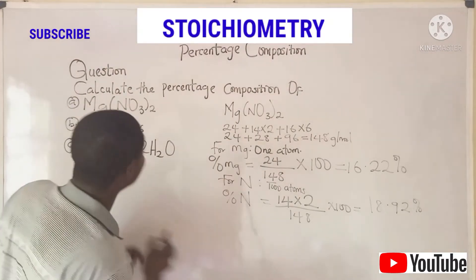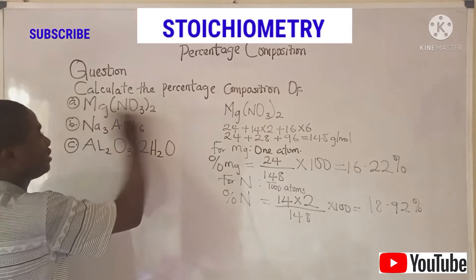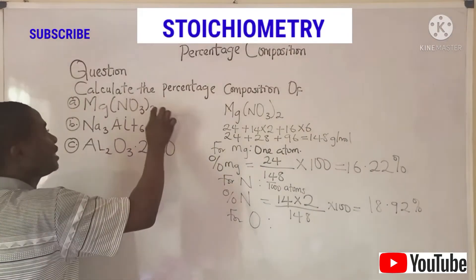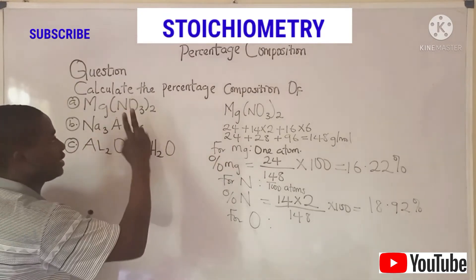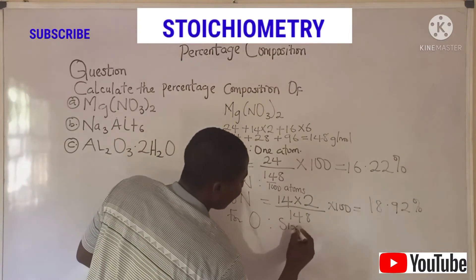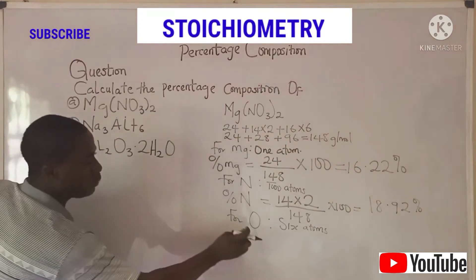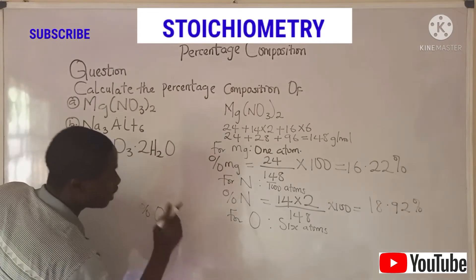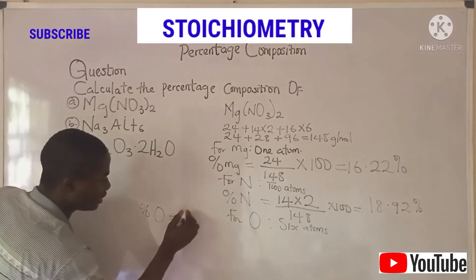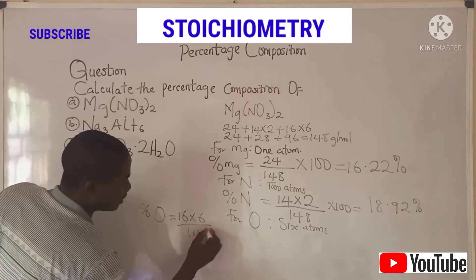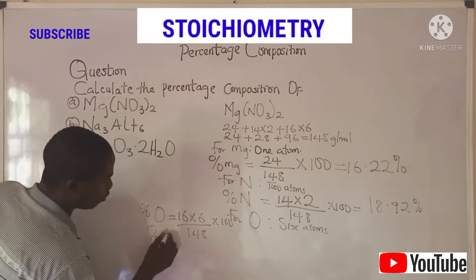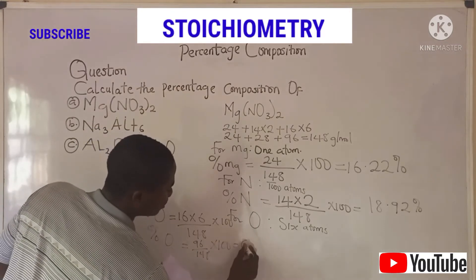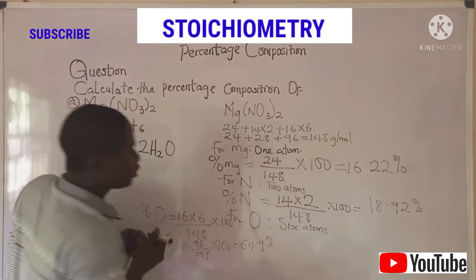Let's quickly determine the percentage of oxygen, which is the last element that makes up this compound. For oxygen, we need to deduce how many atoms are present — we have six atoms (3 times 2). To get the percentage composition of oxygen, we say: the atomic mass of oxygen is 16 times 6, over the formula weight, times 100. So 96 over 148 times 100 gives us 64.9%.